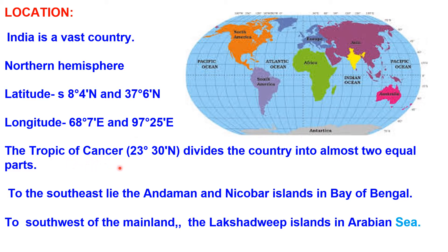The Tropic of Cancer is one of the important lines of latitude - it divides India not into equal halves but almost into equal halves. India also has islands: to the southeast is the Andaman and Nicobar Islands in the Bay of Bengal, and to the southwest of the mainland we have the Lakshadweep Islands in the Arabian Sea.